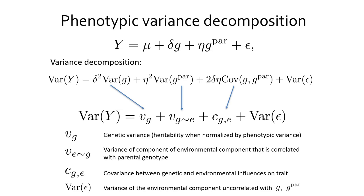We can use the more general way of writing genetic effects on traits — taking into account gene-environment correlation and indirect genetic effects — to derive a more general decomposition of phenotypic variance. In this decomposition, the phenotypic variance equals the sum of the genetic variance explained by direct genetic effects, plus the variance explained by gene-environment correlation (the component of the environmental effect correlated with parental genotype, which also captures some element of assortative mating), plus the covariance between genetic and environmental influences, and a residual environmental variance component from the environment uncorrelated with offspring and parent genotype.